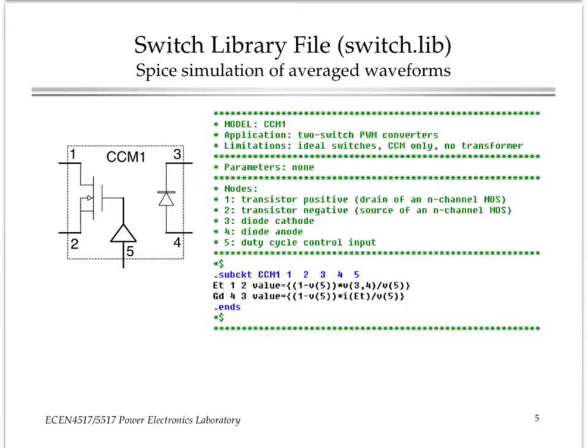The CCM1 model has one, two, three, four, five terminals. Those five terminals are shown right here. One and two define the port where the transistor is located. Three and four define the port where the diode is connected. And five is the port where we enter the actual duty cycle of the switches.